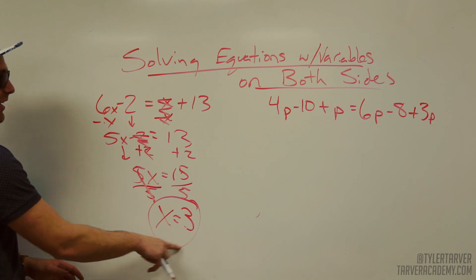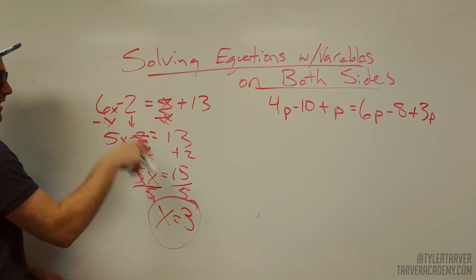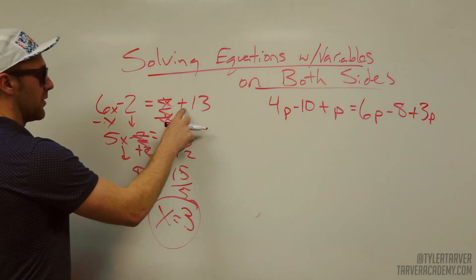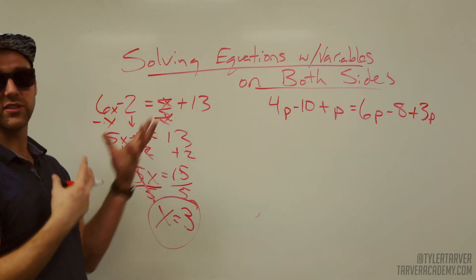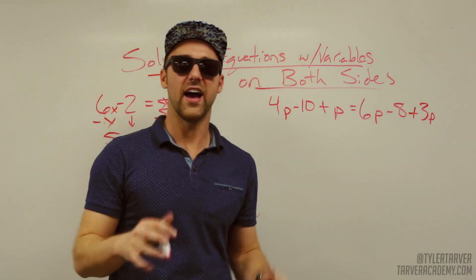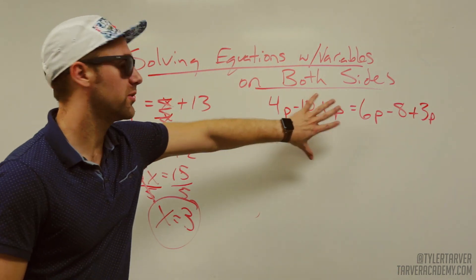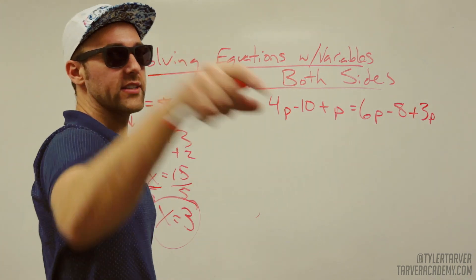I can always check that by plugging that back in up here. 6 times 3 is 18 minus 2 is 16. 3 plus 13 is 16. So, I know 16 equals 16. Got it. I'm just kidding. Okay, here we go. Next one. This is a little more advanced. Let's work it together, shall we?